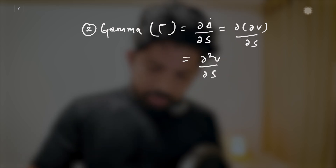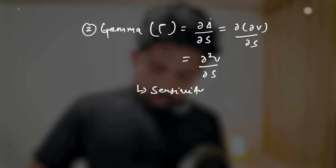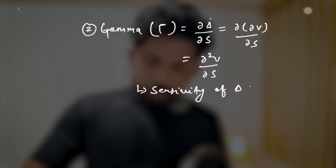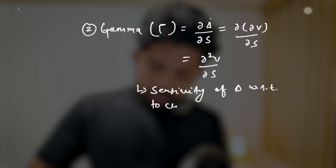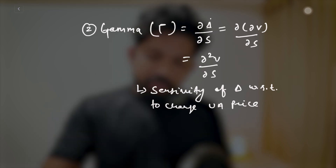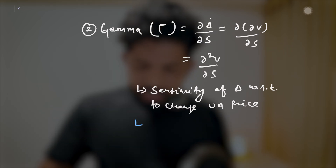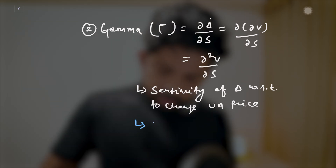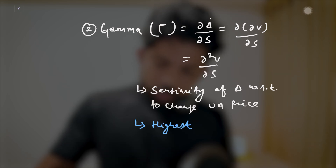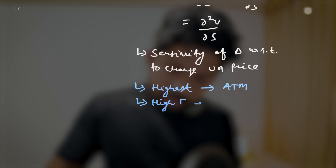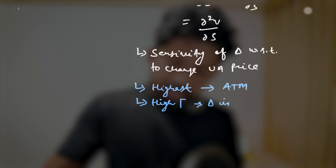Gamma represents the sensitivity of delta with respect to the change in the underlying asset's price. The key interpretations are: gamma is highest when the option is at-the-money, and a high gamma means that delta is very sensitive to the price of the underlying asset.